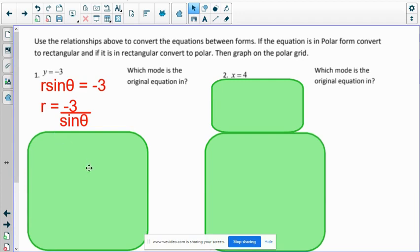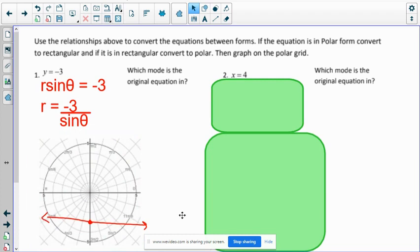So similarly, on the polar grid, I'm going to count down negative three and draw a line straight across. And that's it.